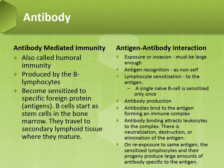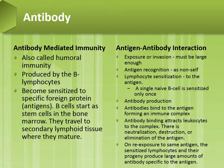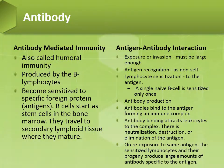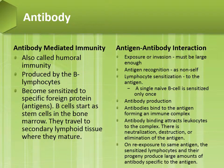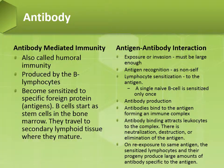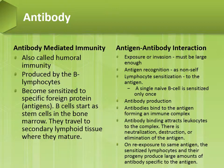A single naive B cell is sensitized only once. There will be antibody production — antibodies bind to the antigen forming an immune complex, and antibody binding attracts leukocytes to the complex. Then there is neutralization, destruction, or elimination of the antigen. On re-exposure to the same antigen, the sensitized lymphocytes and their progeny produce large amounts of antibody specific to that antigen.